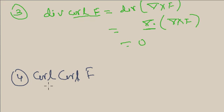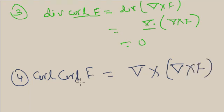Now the fourth formula is curl curl f. If you write in notation form, it is del cross del cross f. Curl of f is del cross f. Curl of this vector means del cross del cross f.